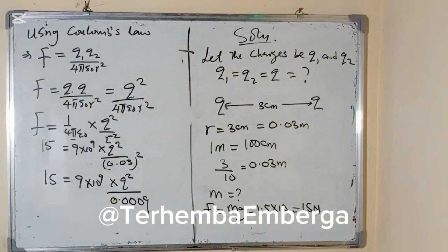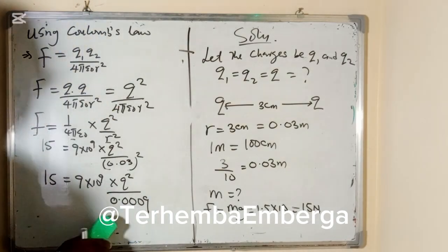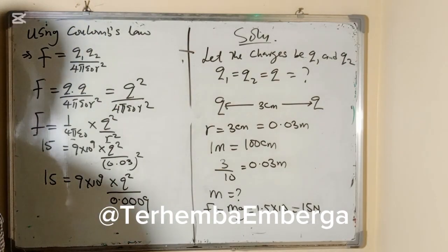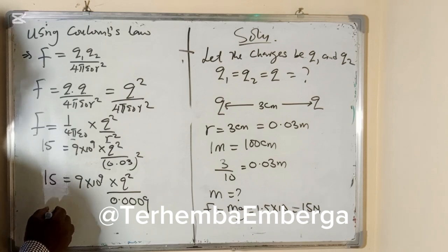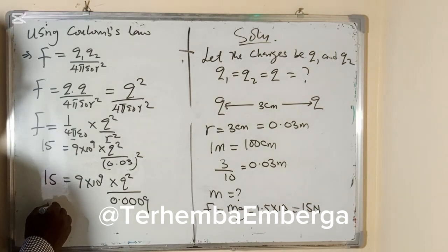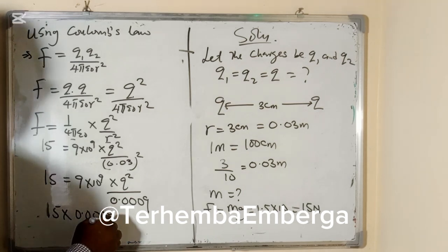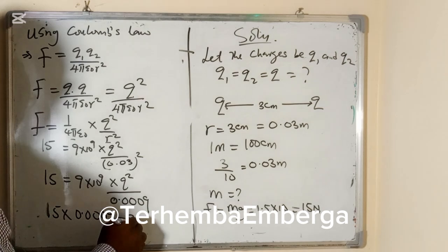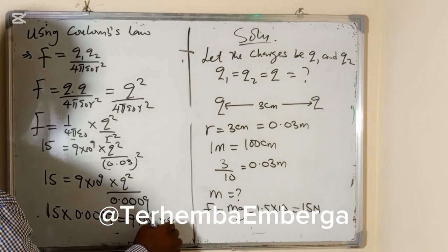If you square 0.03, it will give you 0.0009. With this, we can make Q squared the subject. Cross multiply by saying that 15 times 0.0009 equals 9 times 10 raised to the power 9 times Q squared.